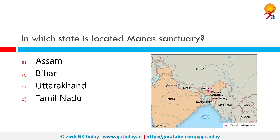In which state is the Manas Sanctuary located? As you can see on the map, the correct answer is Assam. The Manas Wildlife Sanctuary is a UNESCO Natural World Heritage Site, a Project Tiger reserve, an elephant reserve, and a biosphere reserve in Assam. It is home to a great variety of wildlife, including many endangered species like tiger, pygmy hog, Indian rhinoceros, and Indian elephant.